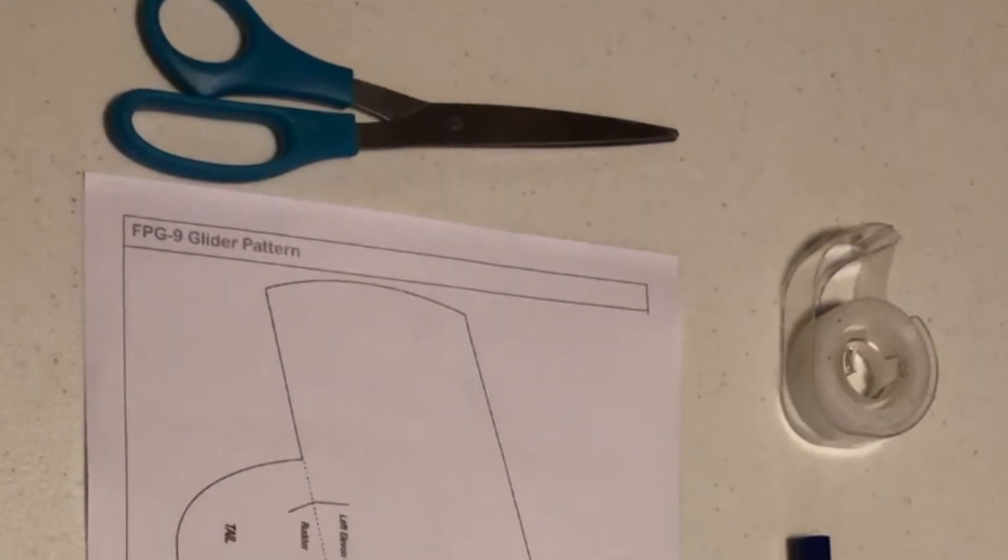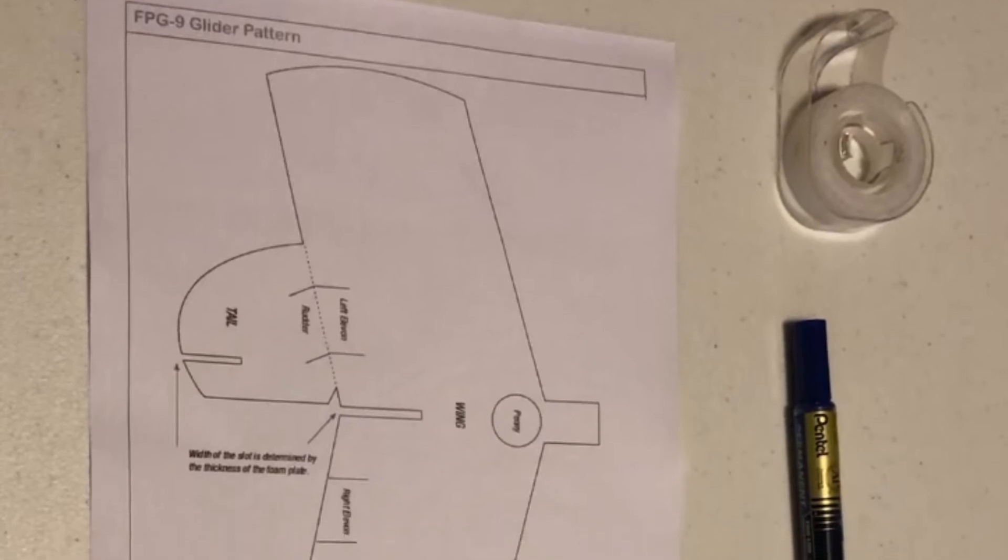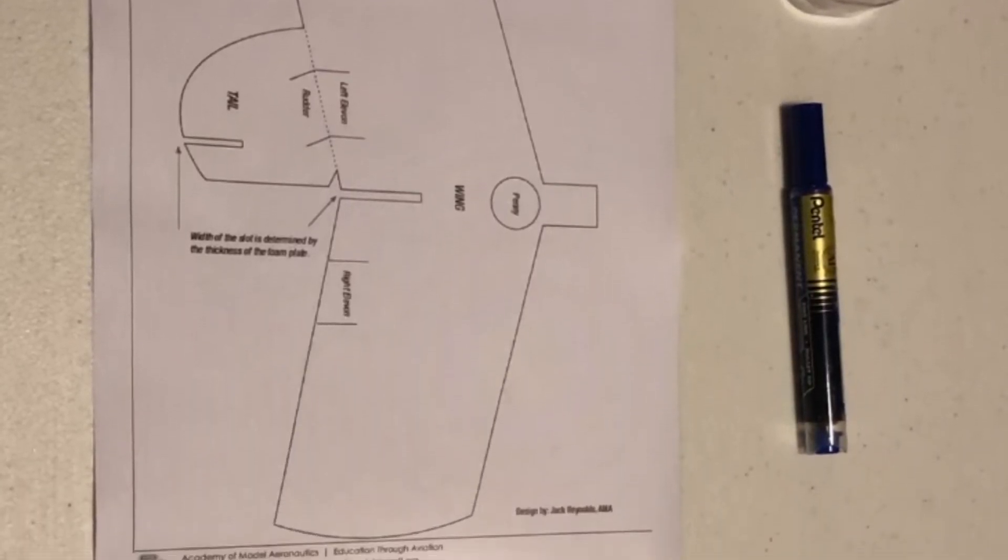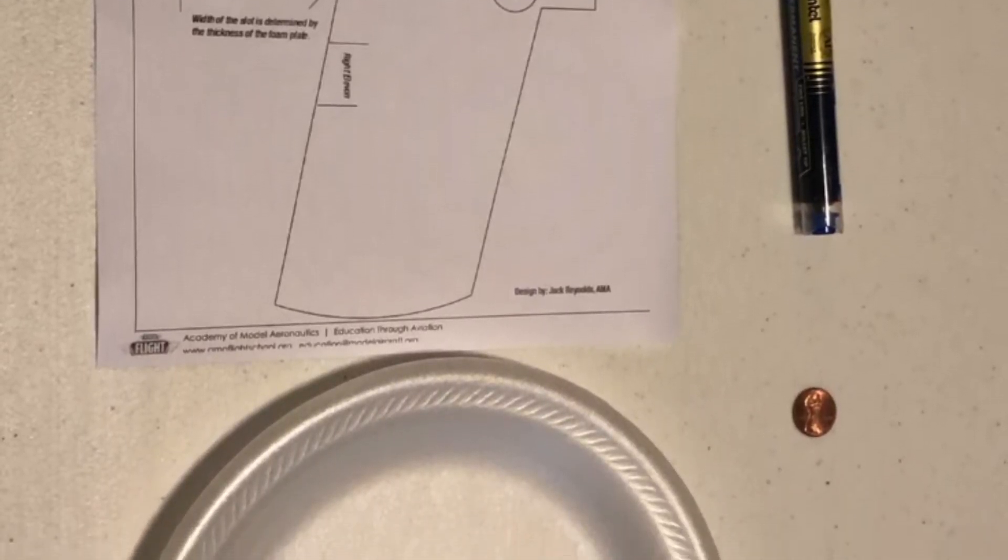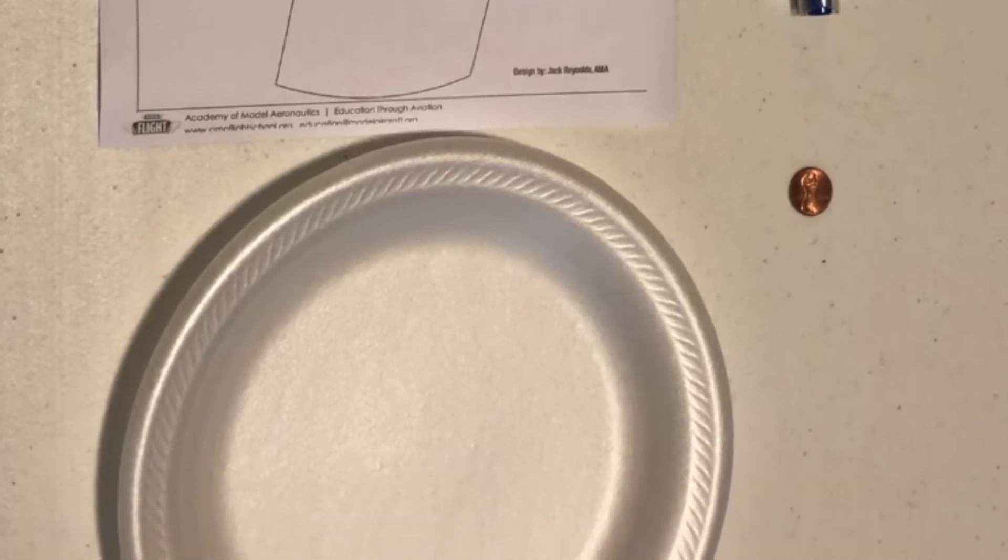For this project you're going to need scissors, the FGC9 template, a pen, some type of tape, a penny, and a foam plate. I will put the link in the description for the FGC9 page template.